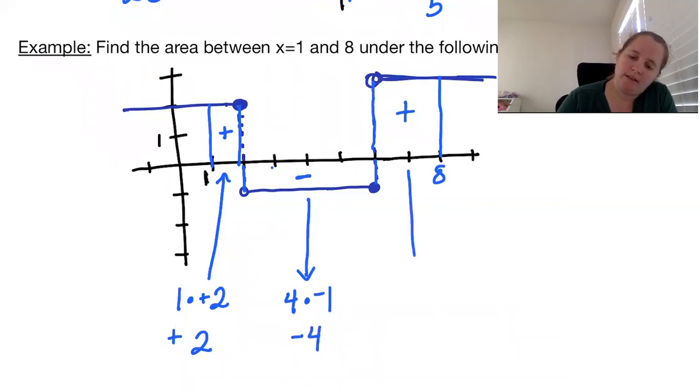And then this last piece we have width 2 times the height of positive 3. It's just 3 rectangles, so we consider this to have area of positive 6.